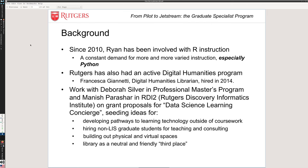That was a data science learning concierge, where it was felt there was a strong need to have learning pathways for students to learn programming languages and data science skills outside of their coursework, because the coursework assumes you know some Python, you know some R, and then you jump in. That program talked about hiring graduate students for teaching and consulting. For us in the libraries, hiring non-library and information science graduate students was a big deal — we had not really done anything like that before. The ideas of building out our physical and virtual spaces and making use of the library as a friendly neutral third place all came back to help us develop this program.